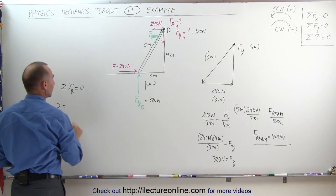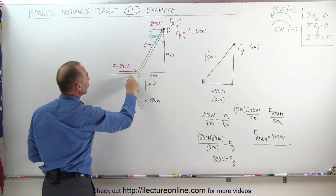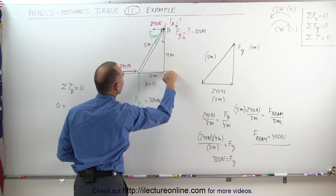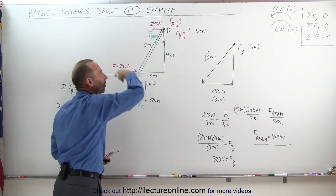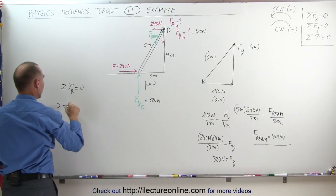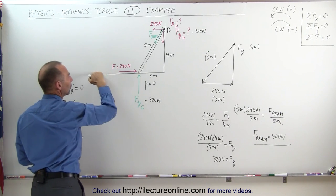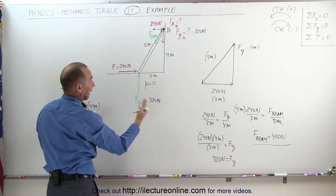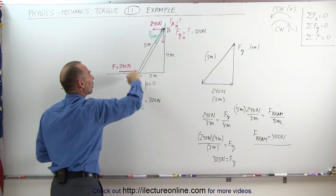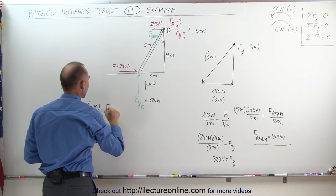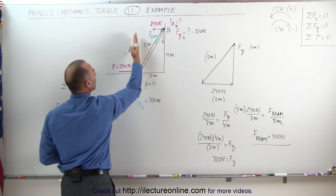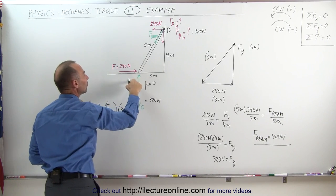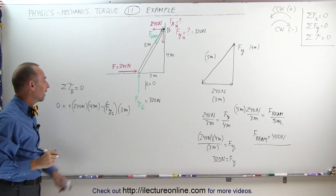Let's add up all the torques. We have the 240-newton force acting horizontally. The perpendicular distance from the line of action of this force to pivot point B is 4 meters, and it causes a counterclockwise torque, so that's positive: plus 240 newtons times 4 meters. The only other force is the vertical force at the ground, which causes a clockwise torque: minus F sub y at the ground times the perpendicular distance of 3 meters. Those are the only two forces acting on the beam relative to the pivot point.